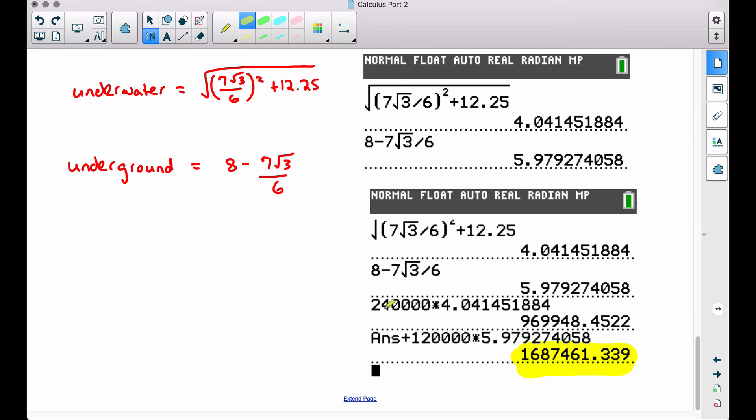And this here is going to be the minimum cost. And let me show you what I did here. I took $240,000 per mile times the number of miles of underwater pipe, that's what we said right here, plus $120,000 per mile times the number of miles of underground pipe, which is what we found right here. Adding these two costs together gives us a total minimum cost of $1,687,461.34.